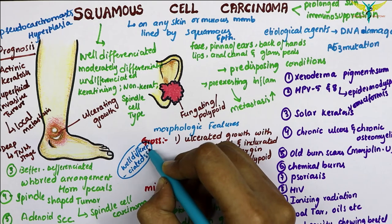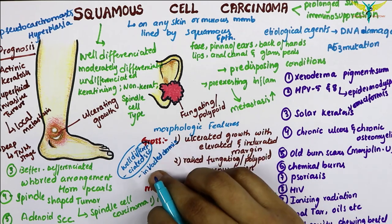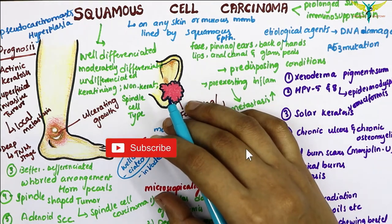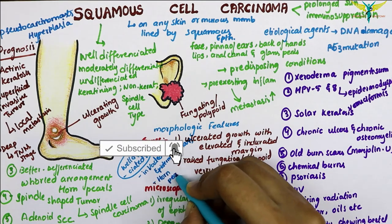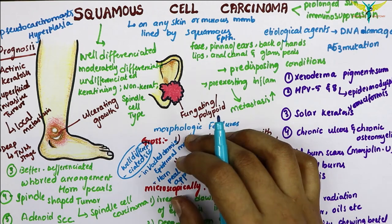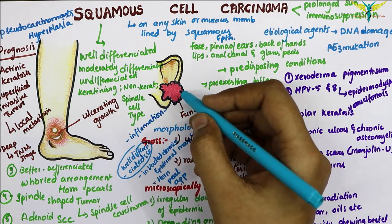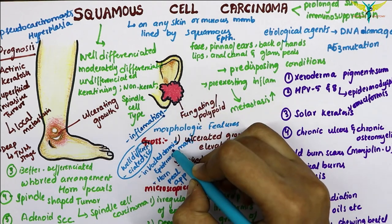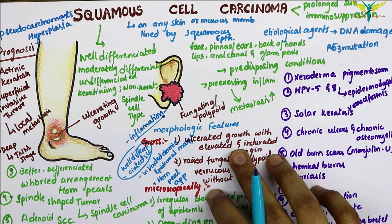In pseudocarcinomatous hyperplasia, there is permeation of the epithelial proliferation by inflammatory cells. The microscopic features of a well-differentiated squamous cell carcinoma show the dermis invaded by downward proliferation of epidermal cell masses, horn pearl appearance with central laminated keratin, and there is always an inflammatory reaction between the dermis and the masses of tumor cells.